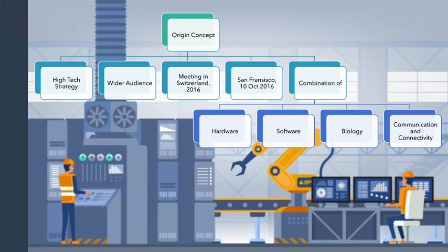This was also the subject and title of Schwab's 2016 book. He included in his Fourth Era technologies that combine hardware, software, and biology, and emphasizes advances in communication and connectivity. Schwab described this era as being shaped by technologies like robotics, AI, nanotechnology, quantum computing, biotechnologies, IoT, wireless technology, 3D printing, and more.